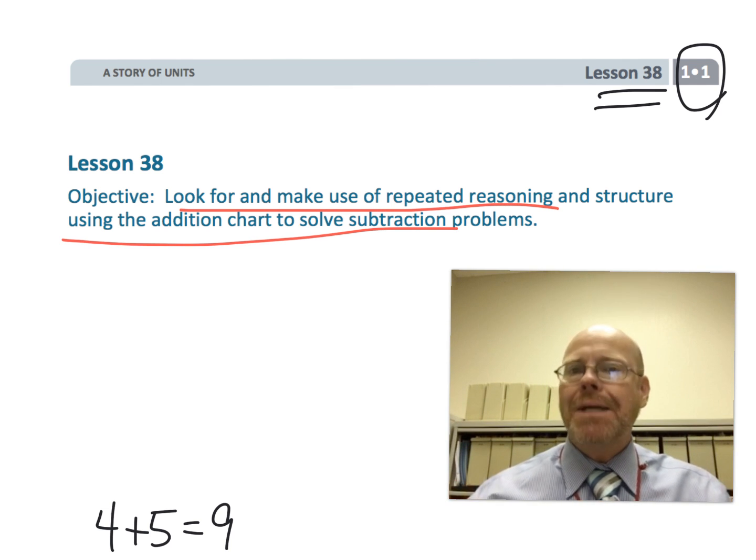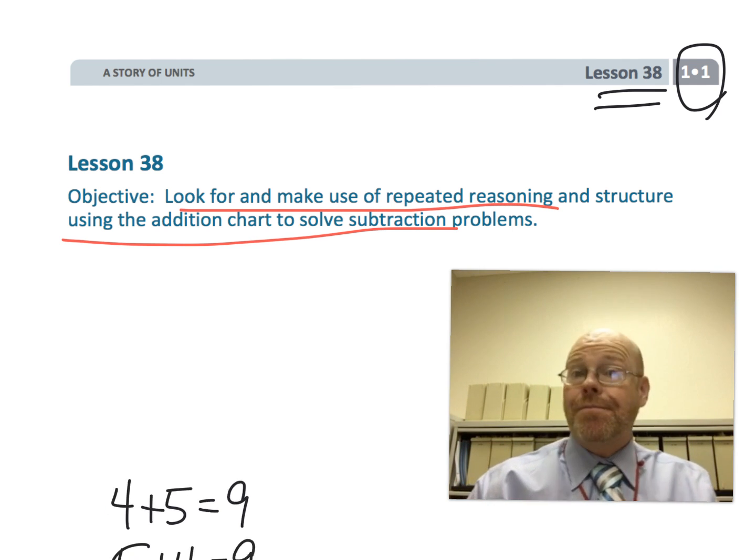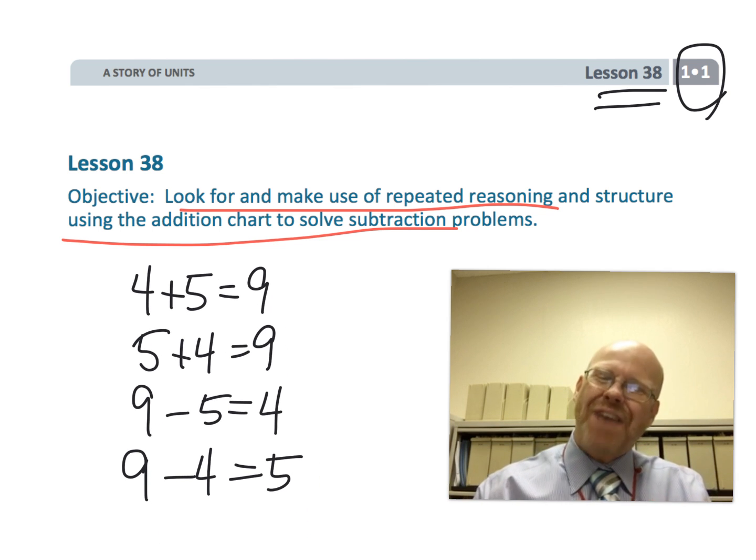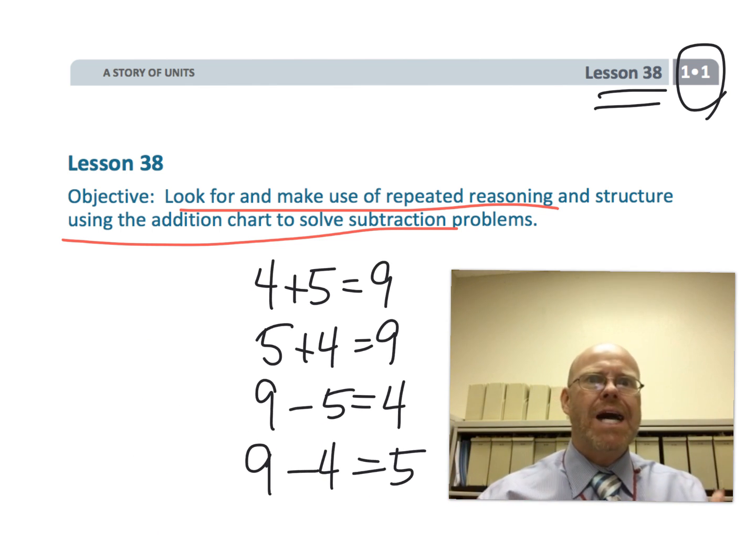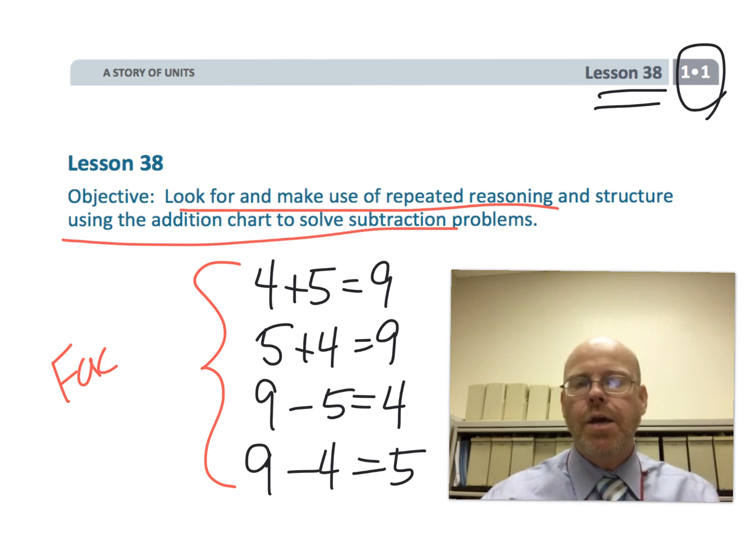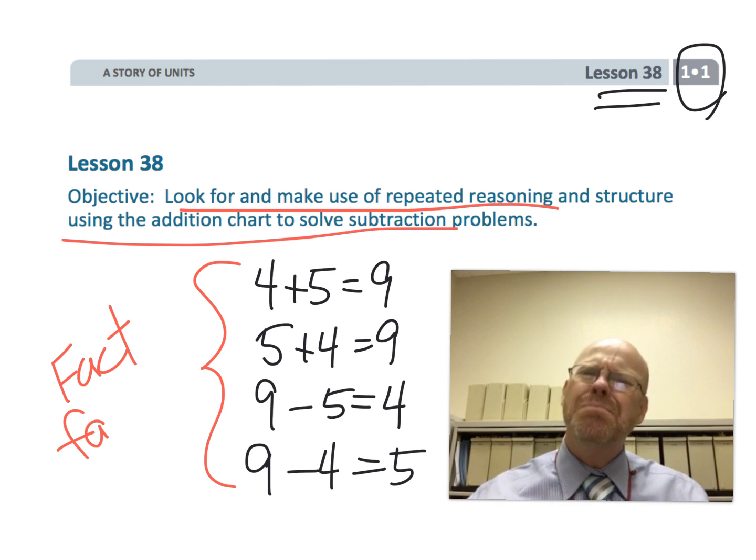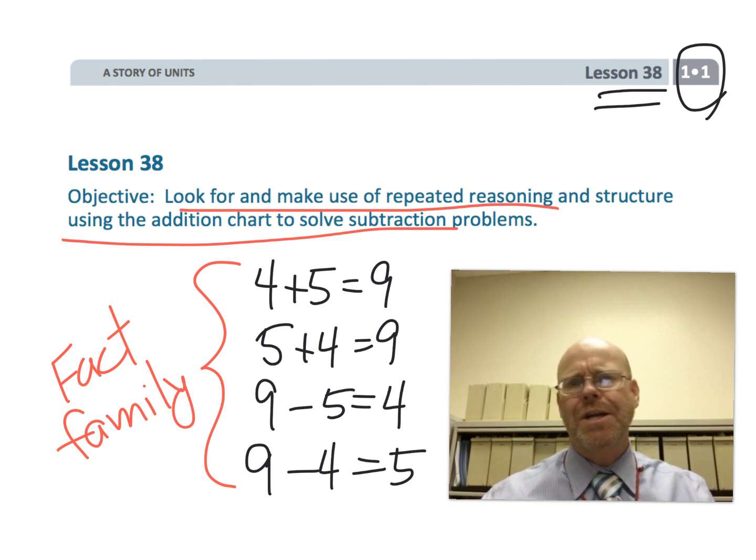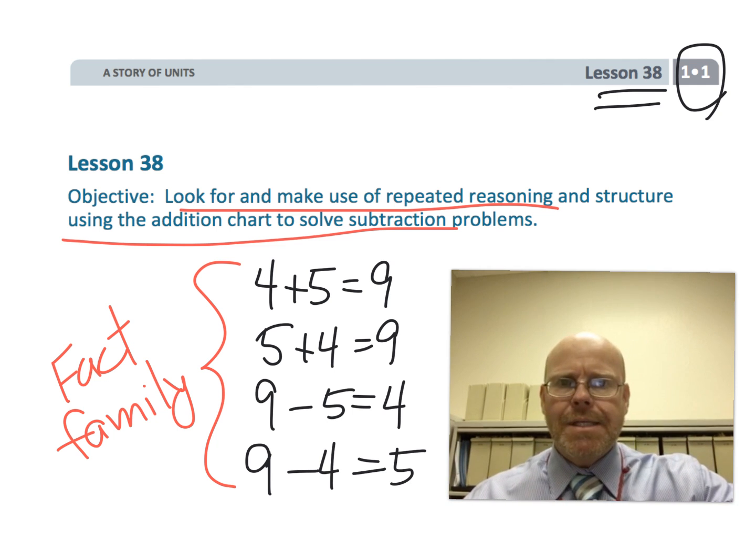Basically what that means is we're going to be looking at number sentences. We used to call them fact families. We're going to have, for example, 4 plus 5 equals 9, and then all of the other number sentences that go in that fact family. That's basically what this lesson is about. We're wrapping up everything we've been learning in the previous lessons all boiled down to fact families.